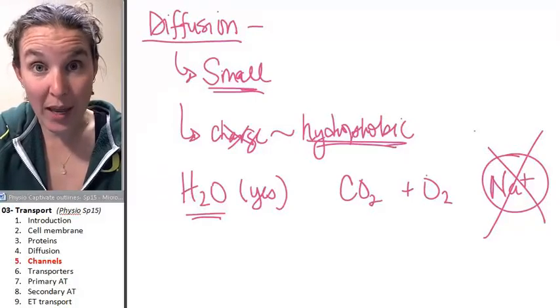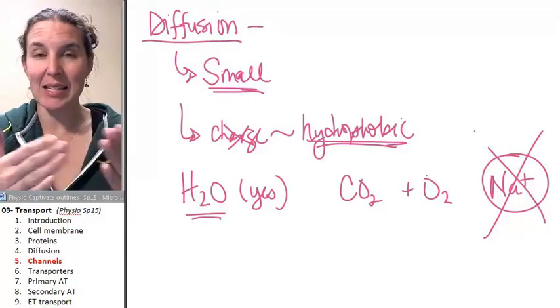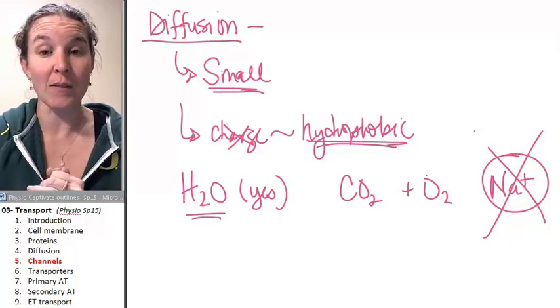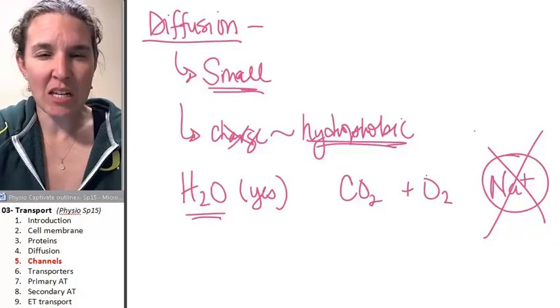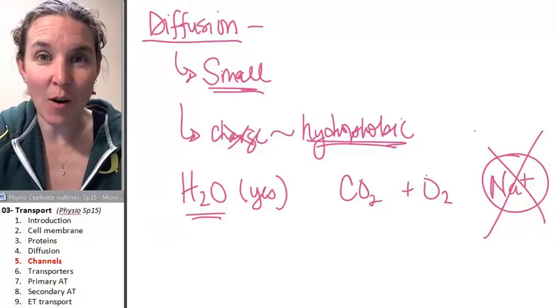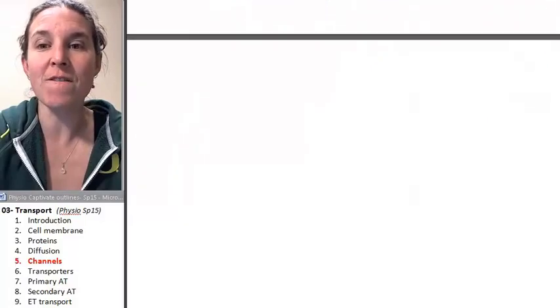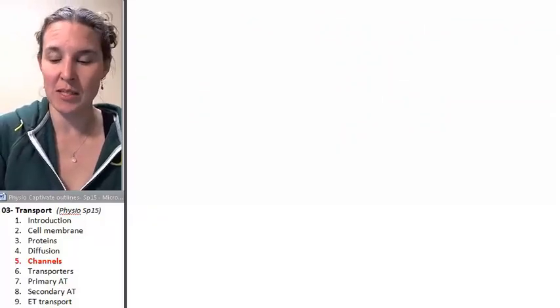Diffusion is one of the ways that things can pass in and out of the cell. Some things can diffuse directly through the cell membrane. Other things need help, and this is where facilitated diffusion comes into the mix.